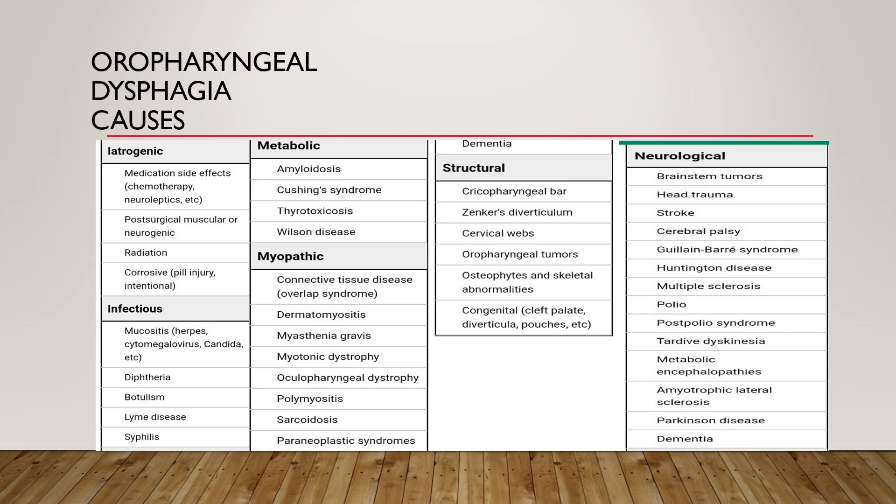Causes of oropharyngeal dysphagia include iatrogenic causes such as post-surgical, radiation, and corrosive intake. Infections include botulism, Lyme disease, and diphtheria. Metabolic causes include thyrotoxicosis. Myopathic causes include myasthenia gravis, dermatomyositis, connective tissue disorders, and myotonic atrophy. Structural causes include congenital cleft palate, diverticular pouches, cervical webs, and Zenker's diverticulum. Neurological causes include stroke, cerebral palsy, and Guillain-Barré syndrome.